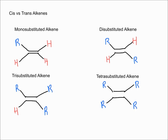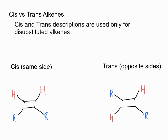One thing to note is that a disubstituted alkene can have different arrangements. You could have the two R groups on the same side, or on opposite sides — both are disubstituted alkenes, but they are different molecules. Cis and trans descriptions are only used for disubstituted alkenes.